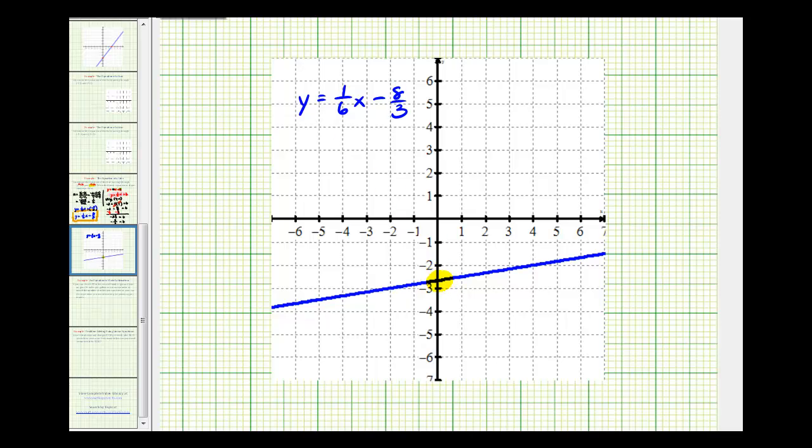And then to verify the slope, if we select two points on the line with integer coordinates, for example, this point here and this point here. Notice how if we wanted to move from this point to this point, we'd have to go up one unit and right six units, which does verify that the vertical change would be positive one and the horizontal change would be positive six, giving us a slope of positive one-sixth.